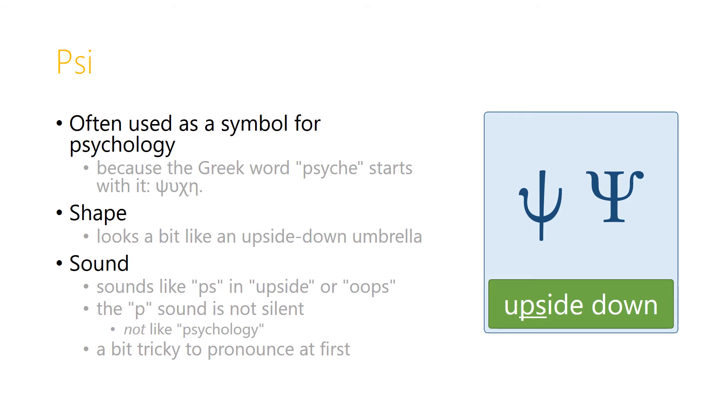The shape of the lowercase might look a bit like an upside down umbrella, and so we can connect the letter psi with the words upside down, and that helps us because the letter psi makes the combination of the P and S sound that we get in upside down.